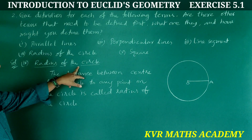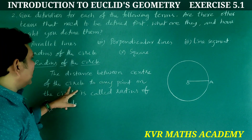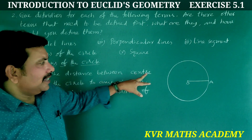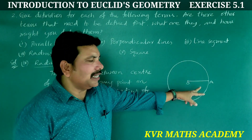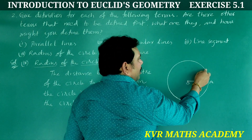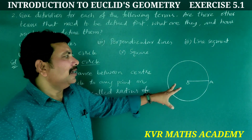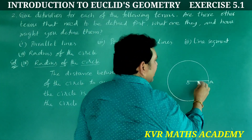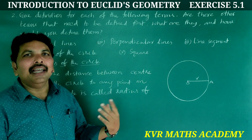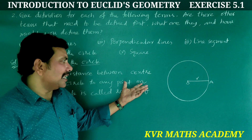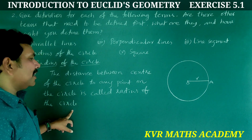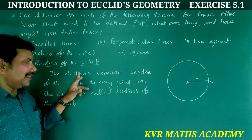Fourth term: radius of a circle. The distance between the centre of the circle to any point on the circle is called the radius of the circle. The radius is shown by R. We can draw an infinite number of radii in a circle.